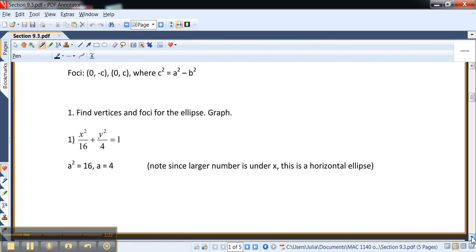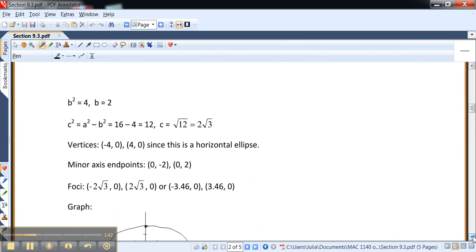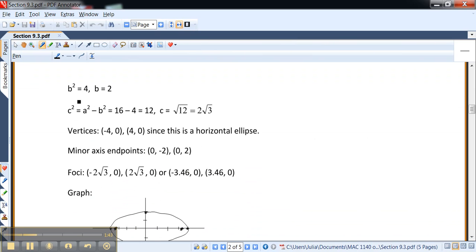Let's say we have this one right here: x² over 16 plus y² over 4 equals 1. The key is to remember that a² equals 16, which means that we have to take the square root, so a equals 4. And it was under x, so we have a horizontal ellipse. b² is equal to 4, but that means b equals 2.